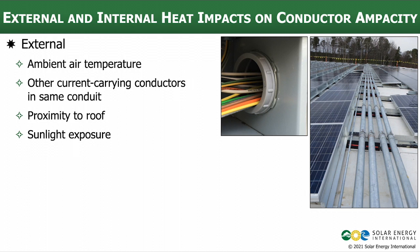Proximity to the roof can certainly make a difference. When we have conductors in raceways or behind modules that are really close to the roof surface, the direct sun and reduced airflow can cause them to operate at higher temperatures, especially with direct sunlight exposure. Something sitting in the sun is going to be hotter than the ambient air temperature. All of these external factors can impact the temperature of a conductor and thus its ampacity.